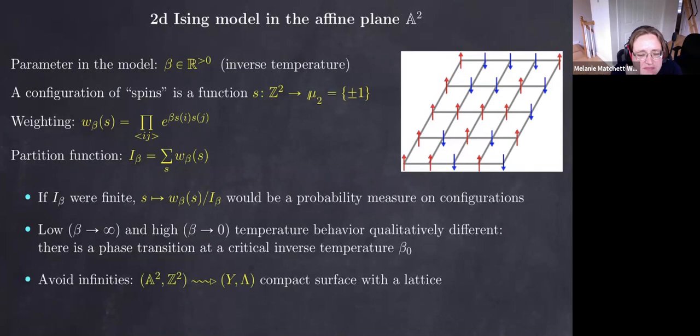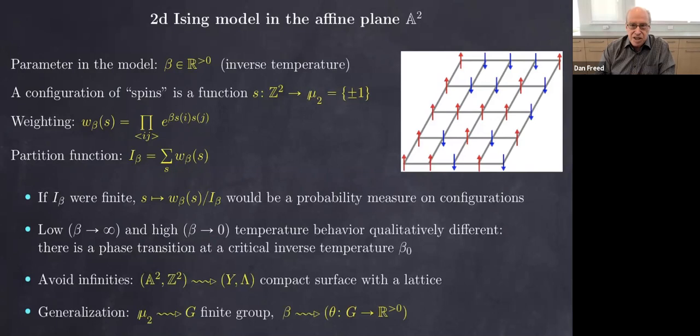We'll also use a generalization where we replace the cyclic group of order two by an arbitrary finite group, and this parameter beta is then replaced by a function on the group. So the model will be determined by a finite group and a function.